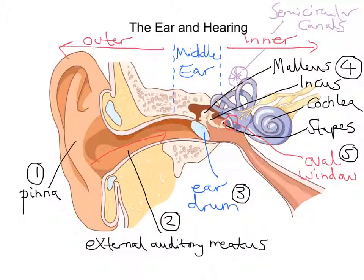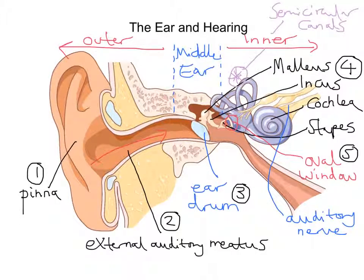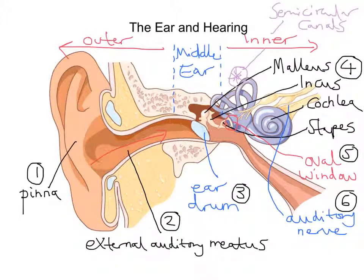That nerve impulse will get transmitted to the brain via what's called the auditory nerve. The auditory nerve is this portion here. That would be number six — it passes on that nerve impulse, or action potential, to the brain as a result of those tiny hairs in the cochlea receiving those individual wavelengths of sound.